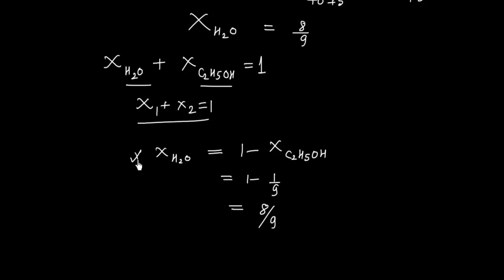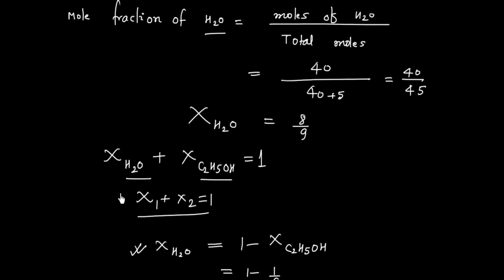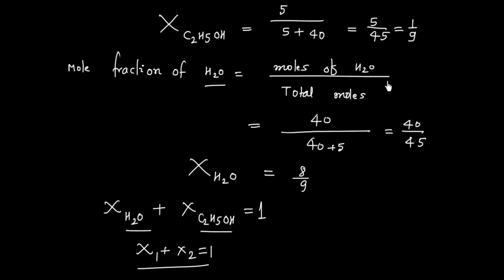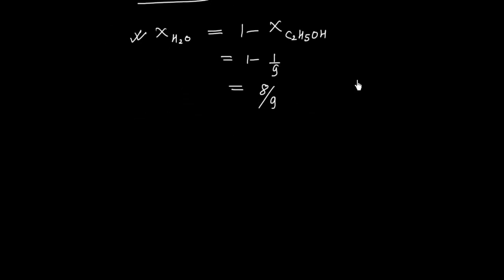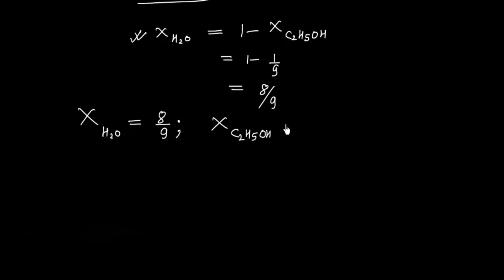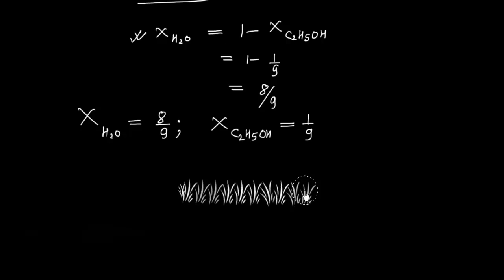So either you use the formula mole fraction of H2O plus ethyl alcohol equals 1, or you directly calculate mole fraction using moles of H2O divided by total moles — both give the same answer. Mole fraction of H2O is 8/9 and mole fraction of ethyl alcohol C2H5OH is 1/9. This illustrates how to find mole fractions. Thank you.